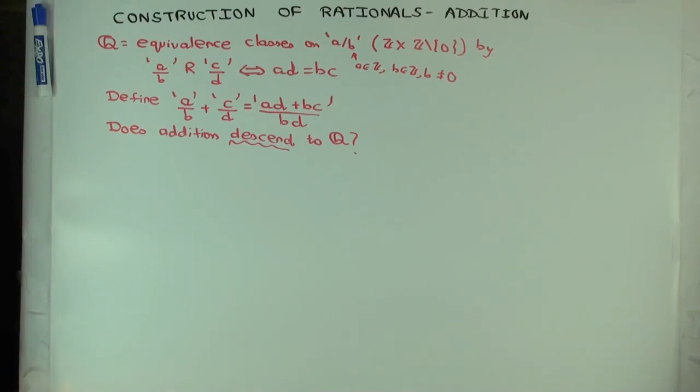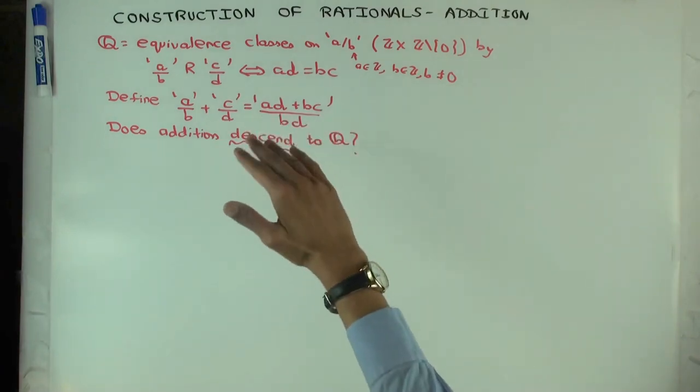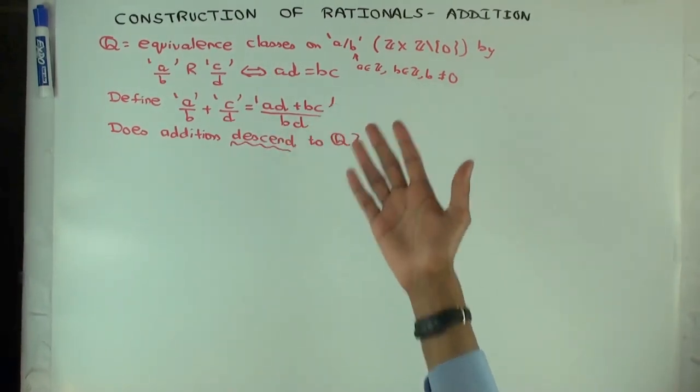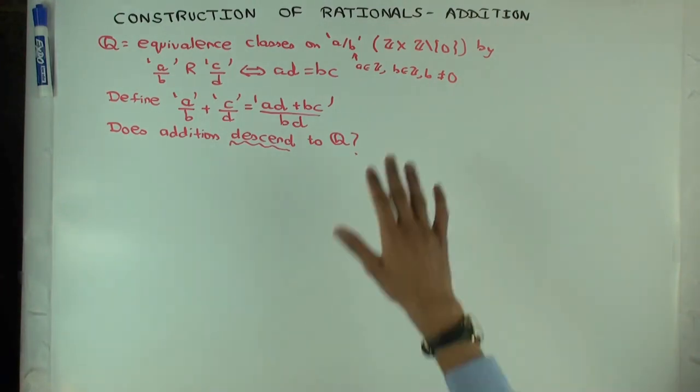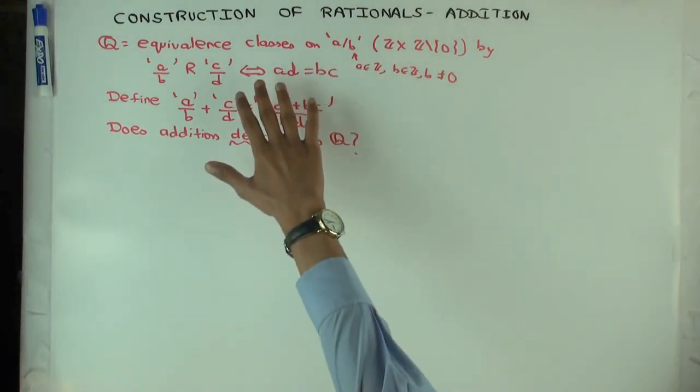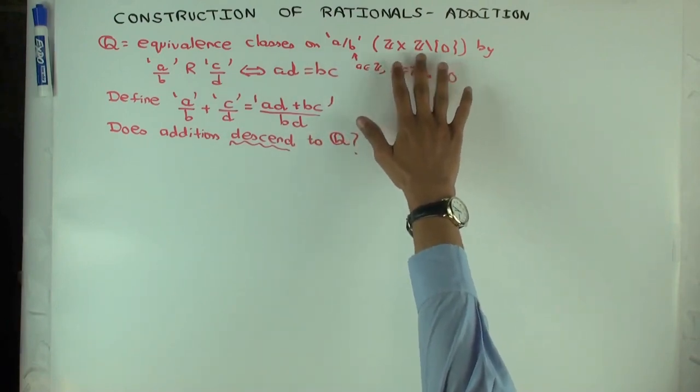So in this talk, I'm going to try to do one aspect of the construction of rationals. I'm going to assume you are already familiar with, or you've already seen the video on the rational numbers as equivalence classes on the set Z, the set of rational numbers, the set of equivalence classes on the set Z cross Z minus 0.